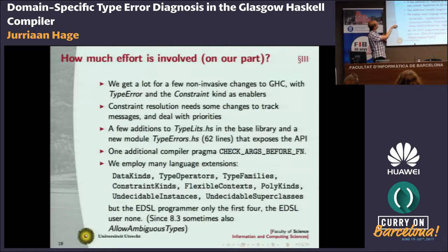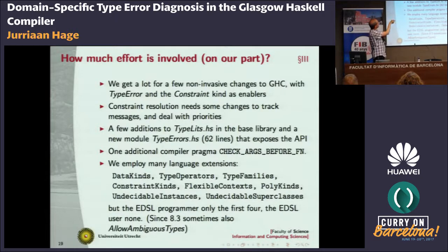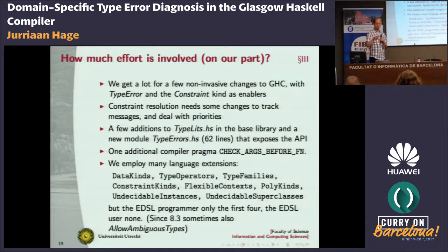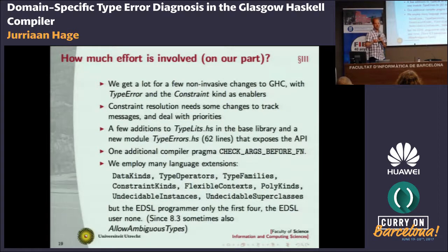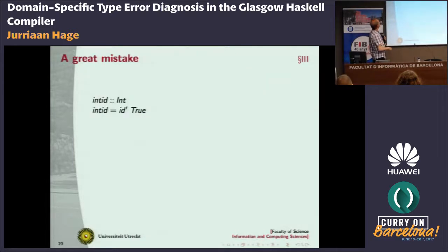Inside GHC, we need some way of tracking the messages associated with constraints and we need to deal with priorities, because we sometimes want to control the order in which constraints are resolved. The TypeError and the constraint kind do most of the heavy lifting for us. We need to add a few things to the type-lids files in the compiler — just about 20 lines of code — and we added a new module, TypeErrors, which is basically the API I will explain. We do need lots of fancy type-level extensions. The EDSL programmer only needs the first four; the EDSL user typically needs none.